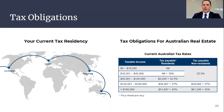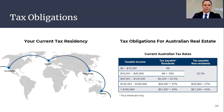While Australia has double tax agreements with many countries in Asia, Europe and America, likely meaning you avoid paying tax twice on the same income, it is important to understand the rules in your jurisdiction as well.